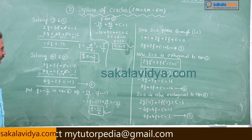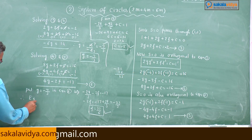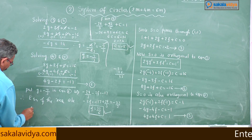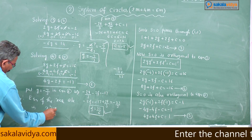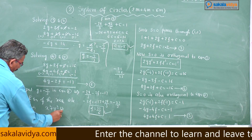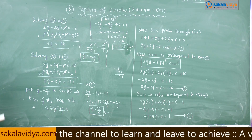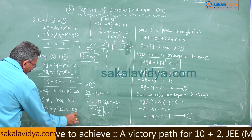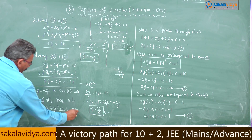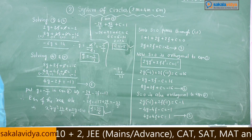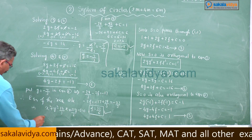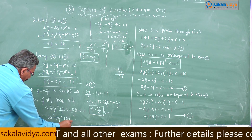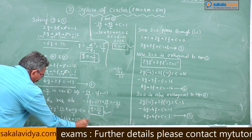Therefore, the equation of the required circle is x² + y² + 2gx + 2fy + c = 0, substituting g = −7/3, f = 23/6, c = −5: multiplying through by 3 gives 3x² + 3y² − 14x + 23y − 15 = 0.